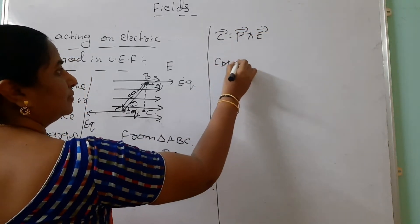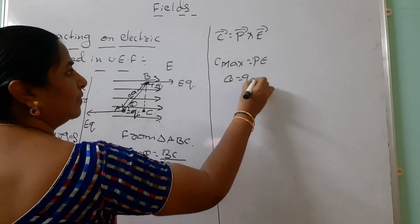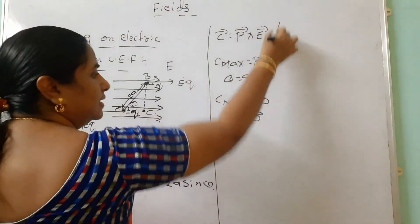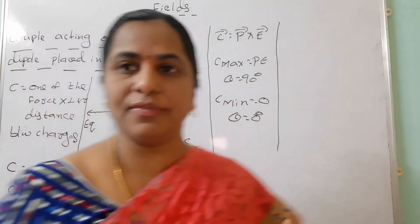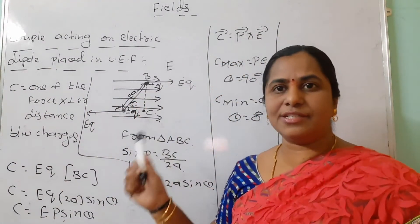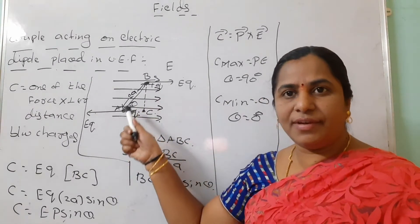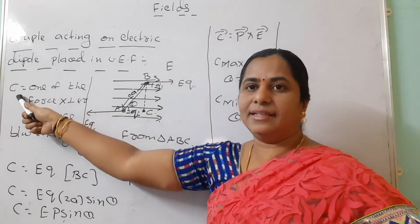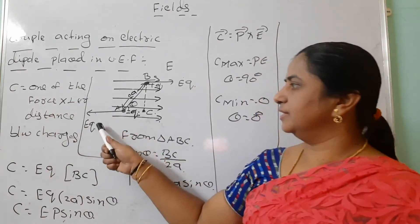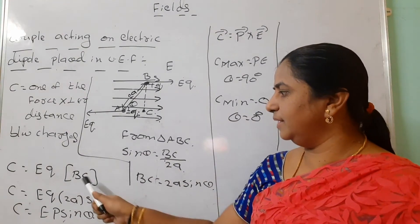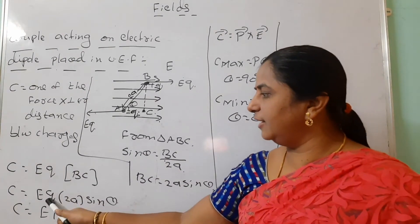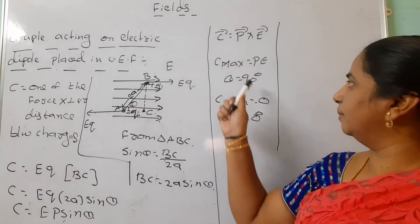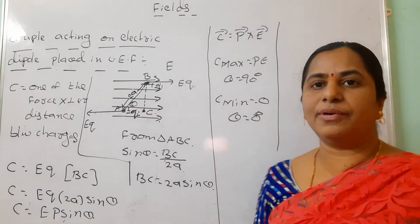The couple is maximum when θ = 90° and minimum when θ = 0°. To summarize: place the electric dipole in the electric field, two forces act in opposite directions, the couple C = EQ × perpendicular distance BC = 2A sin θ, and since 2AQ = P (electric dipole moment), C = PE sin θ. This is also important for 4-mark answers.